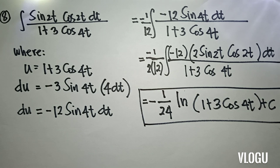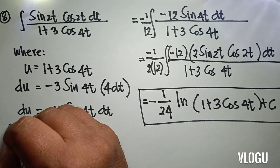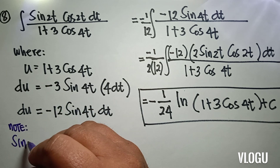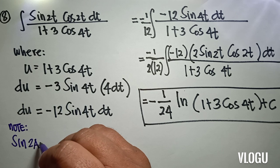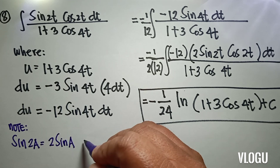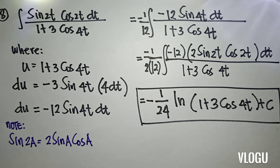As a review, note that sin(2a) is equivalent to 2 sin(a) cos(a). So that is now our final answer.